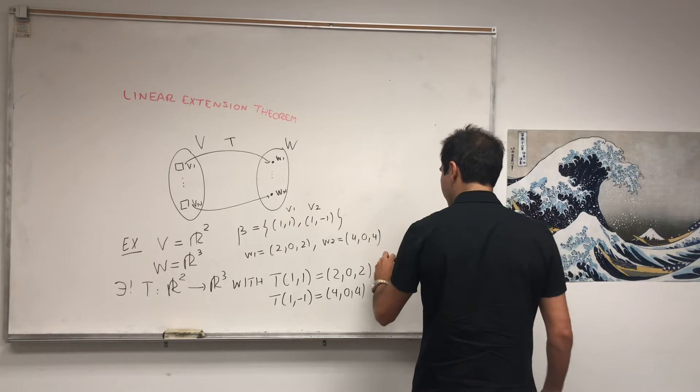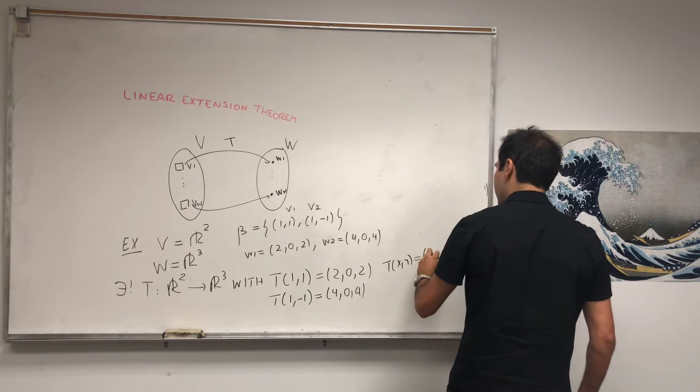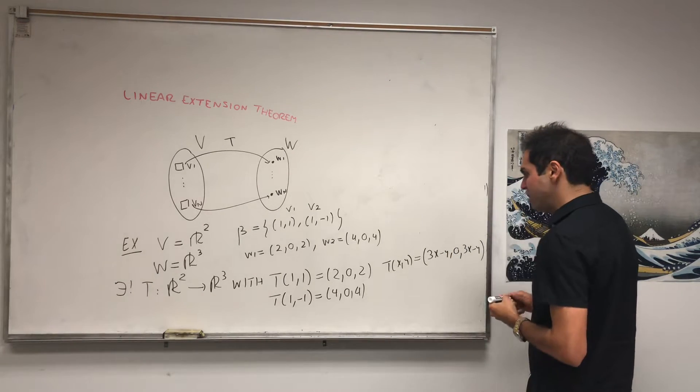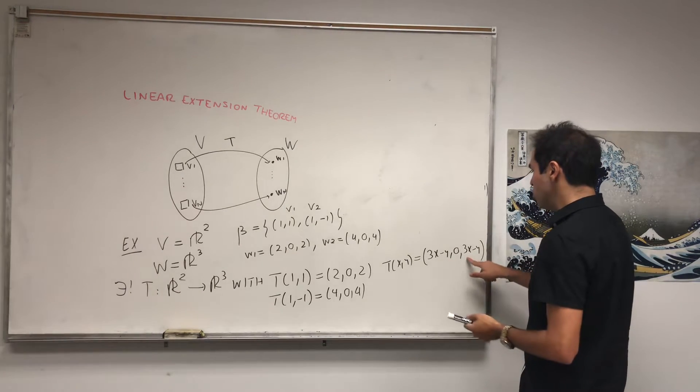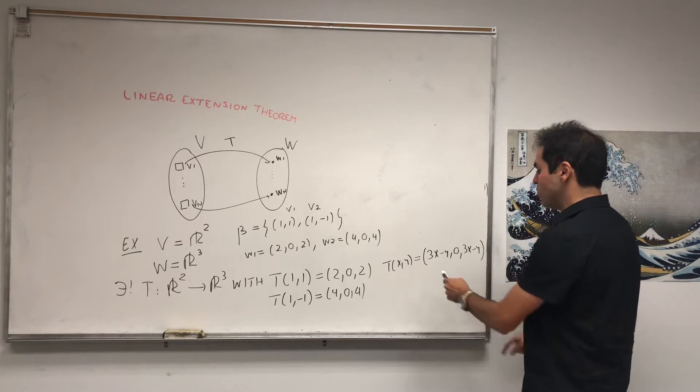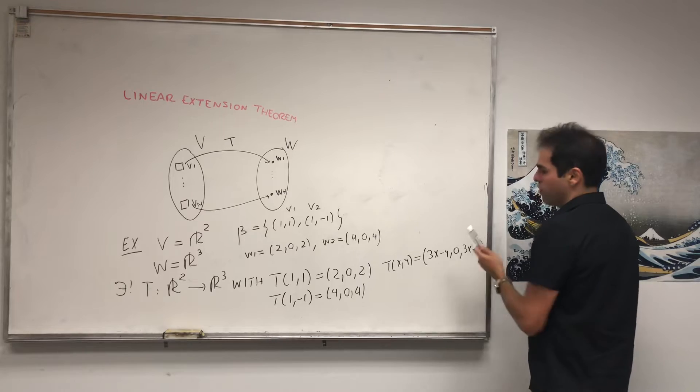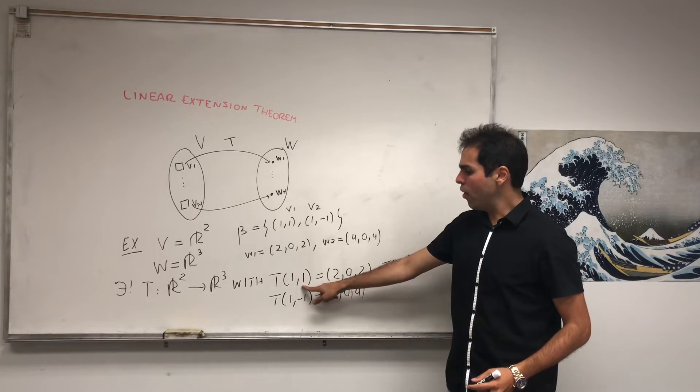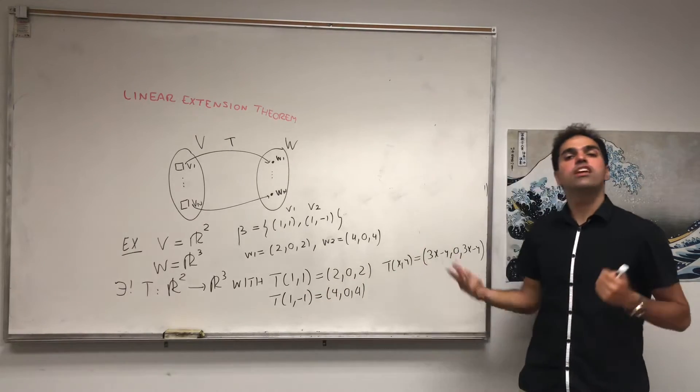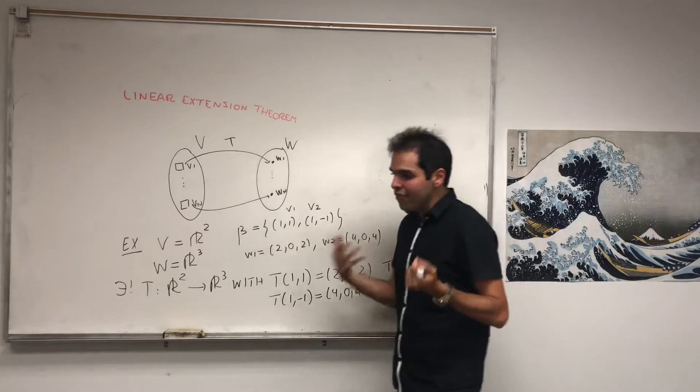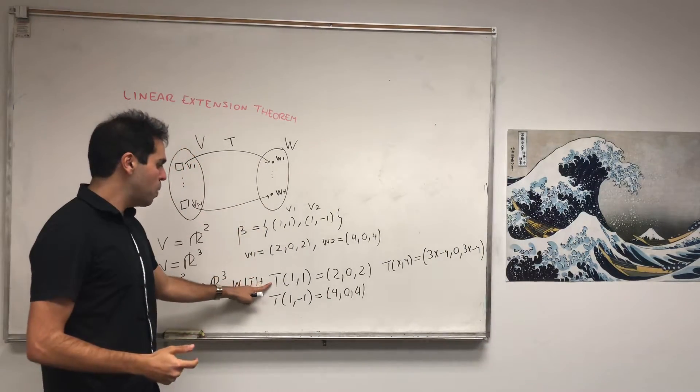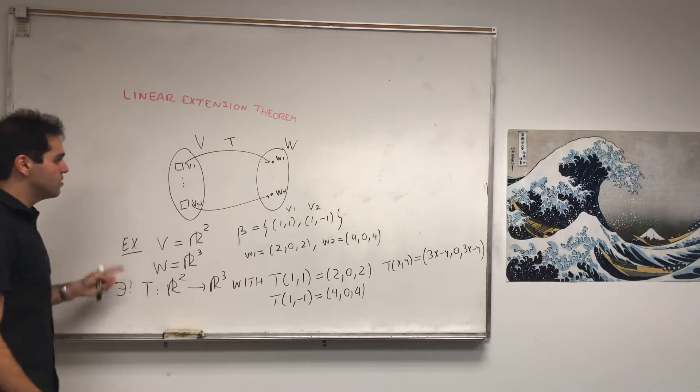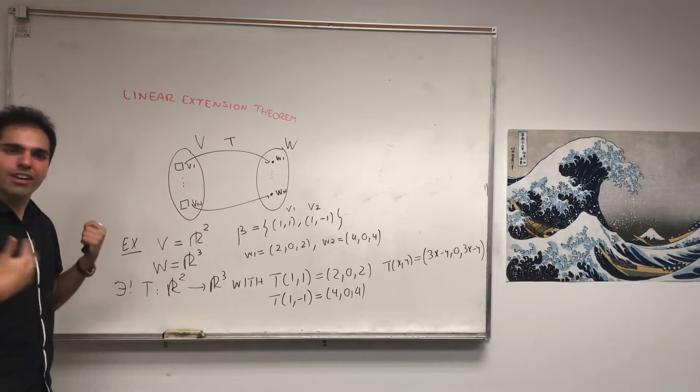And I believe what T does is just T of (x,y), I think it's (3x-y, 0, 3x-y), let me just check. So T of (1,1), 3 minus 1, which is (2,0,2), so that's good. And then T of (1,-1), that's 3 plus 1, which is (4,0,4). But again, the formula doesn't matter. What matters is, you see, only by specifying T on those two vectors, we can already see what T is. And in fact, that's all what a matrix is. A matrix just puts all those values, T of (1,1) and T of (1,-1) together, but as coordinates.